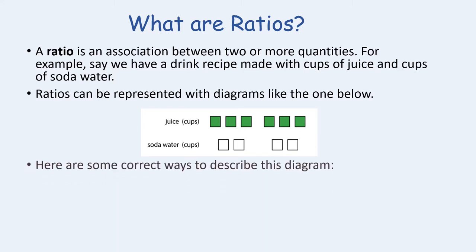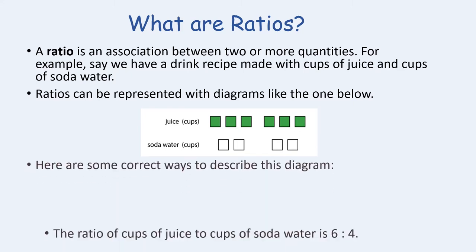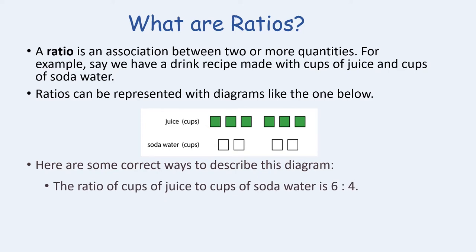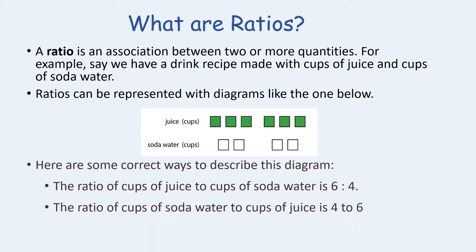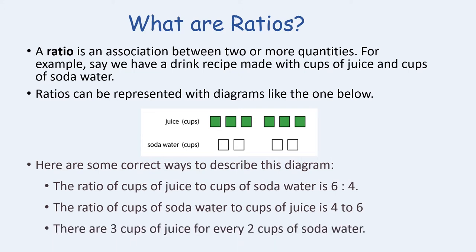Here are some correct ways to describe this diagram. First, the ratio of cups of juice to cups of soda water is six to four. Second, the ratio of cups of soda water to cups of juice is four to six. Third, there are three cups of juice for every two cups of soda water. These are just three ways to correctly describe this diagram — can you think of any more?